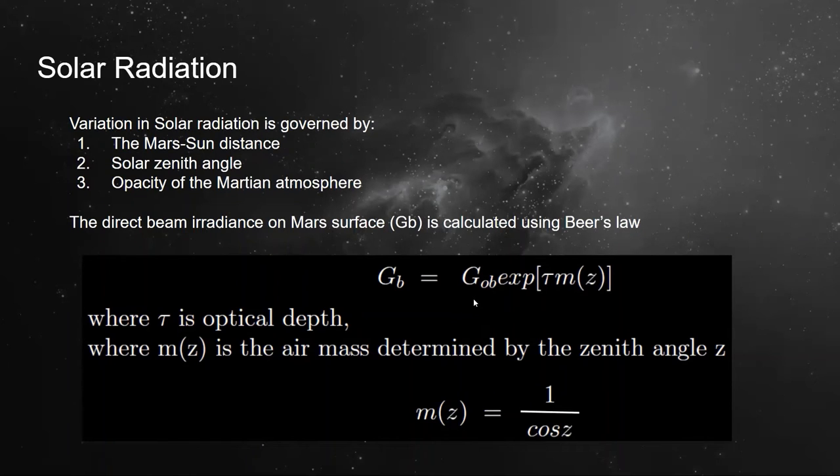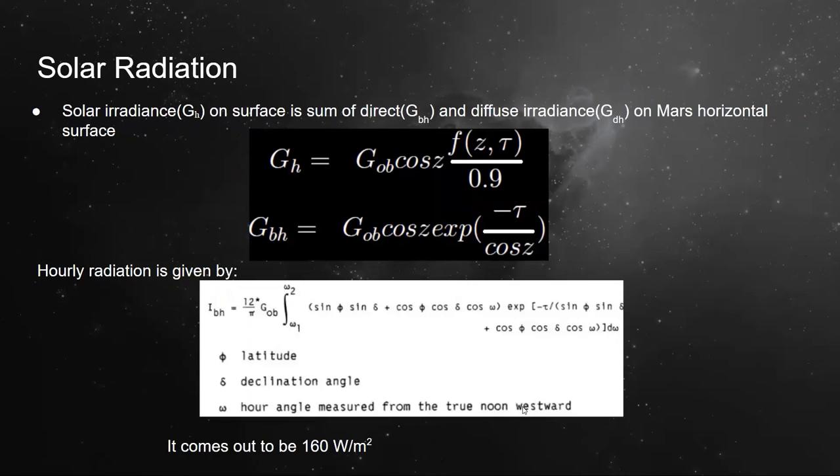The air mass is determined as 1 upon cosine of zenith angle Z. Along with direct beam irradiance, the solar radiation also depends upon diffusive irradiance. Thus, total solar radiation can be given as the sum of direct beam irradiance and diffusive irradiance.